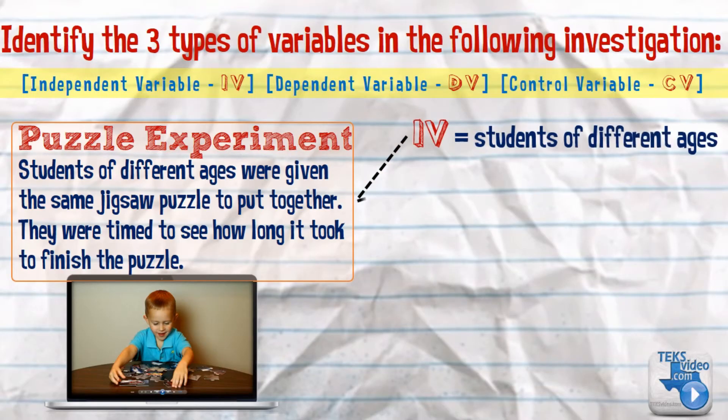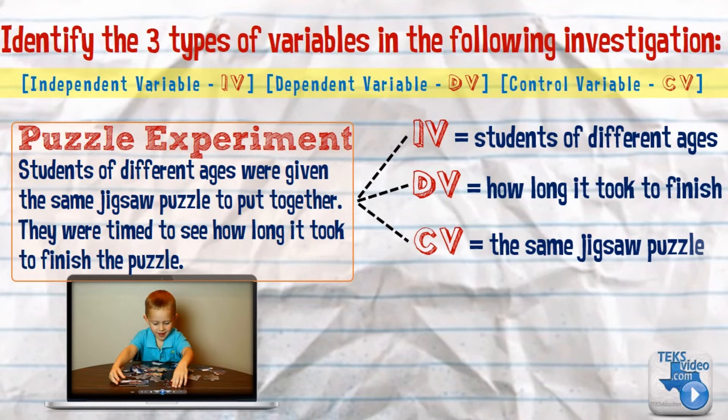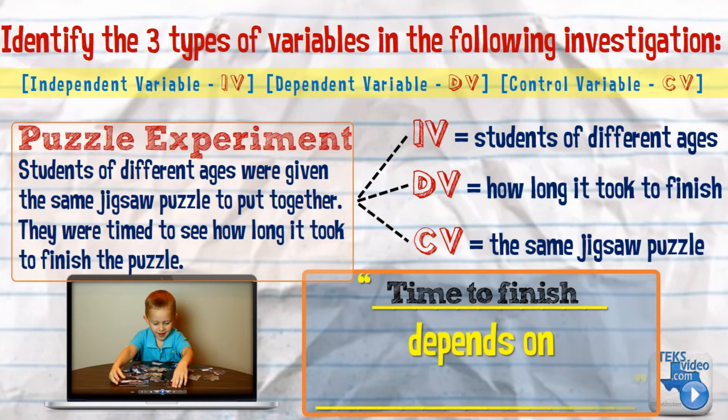We identify the independent variable, that is, the students of different ages. The dependent variable is how long it took to finish. The control variable is the same jigsaw puzzle. Therefore, if we use our formula, let's fill in the blanks. Time to finish depends on the age of the student.